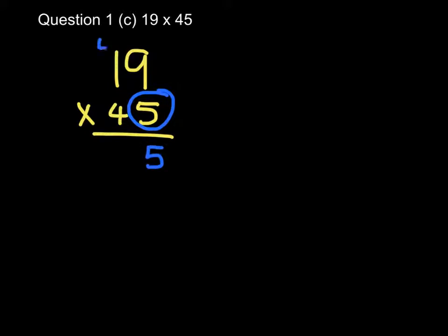So part C asks us to do 19 times 45. Again, first of all we're going to multiply the 19 by the 5. So 5 times 9 is 45, put down my 5, carry my 4. 5 times 1 is 5, add 4 is 9.